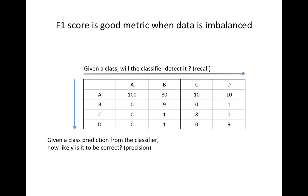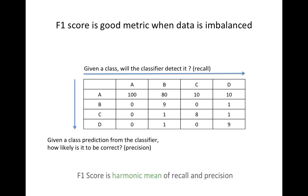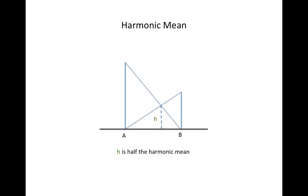The F1 score is a good metric when data is imbalanced. The magic of the F1 score is that it considers both sides: given a class, will the classifier detect it — that's recall — and given a class prediction from the classifier, how likely is it to be correct — that's precision. The F1 score is the harmonic mean of recall and precision.